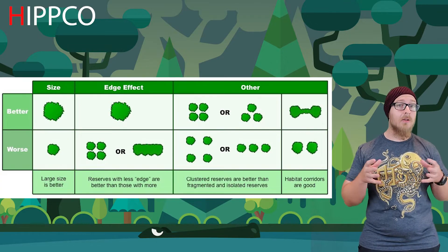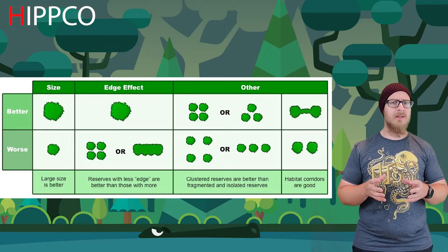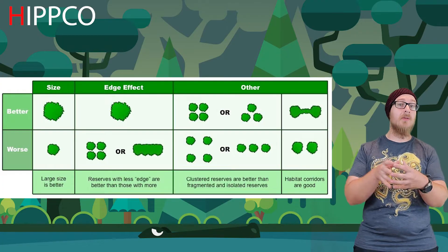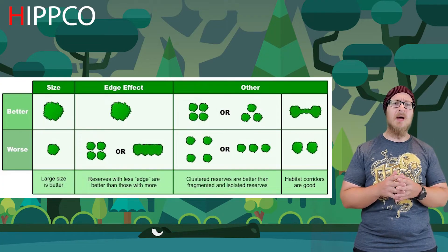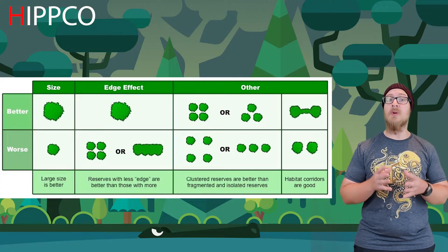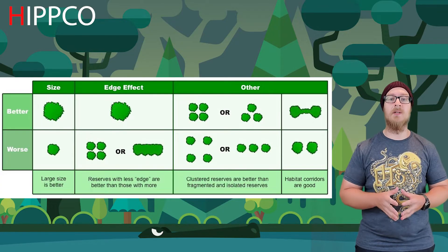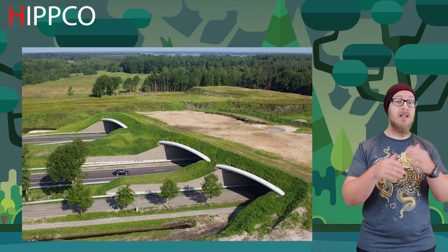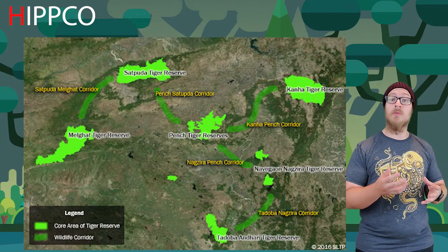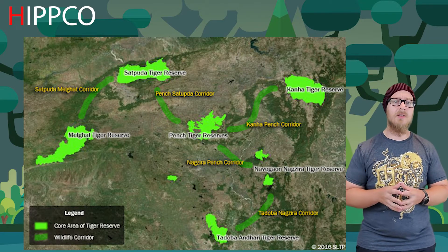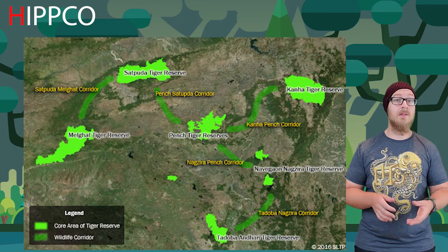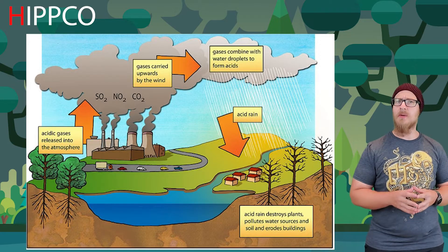We can help manage or mitigate the edge effect by being more strategic with land use. Leaving a large fragment intact is better than leaving multiple smaller fragments. Fragments closer together are better than those spaced far apart, as this may allow individuals or populations to move between them. The best solution is to include habitat corridors between fragments, giving species a safe passage. For example, a map of tiger reserves in India shows dark-shaded corridors established to allow tigers an extended range for finding food and mates.